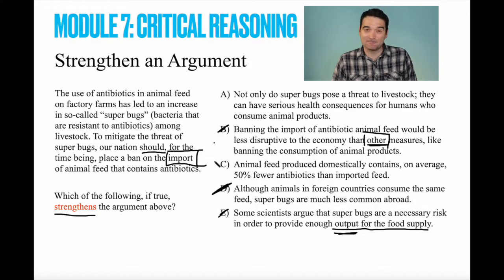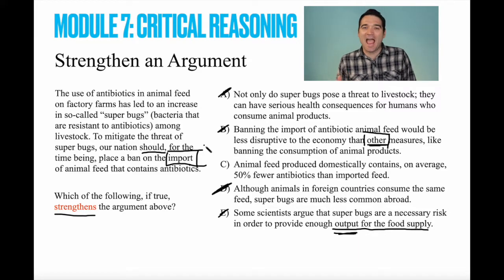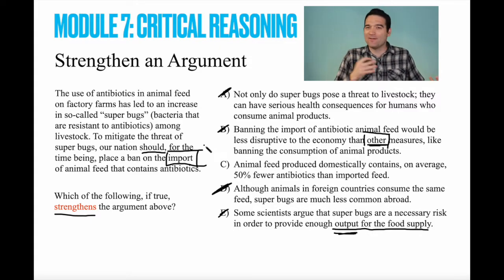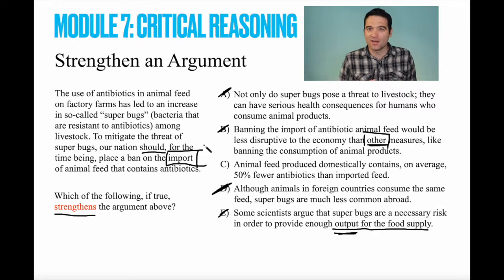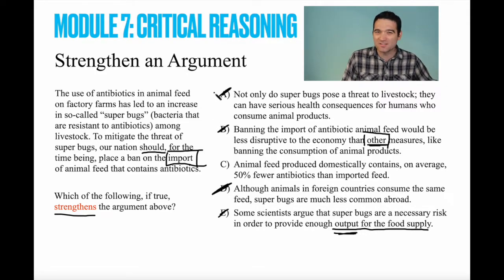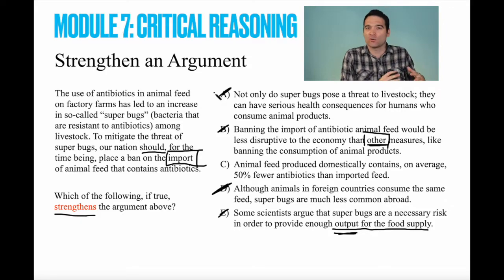Now we're down to A and C, and A is unfortunately a wrong answer — a very popular wrong answer. A simply adds more evidence to a premise that we've already accepted as true: that superbugs are bad. We already agree that superbugs are bad. If we add more evidence saying just how bad superbugs are, that doesn't strengthen the actual logic of the argument — it doesn't get us from A to B. Answer option A is a great example of strengthening evidence rather than strengthening the argument. Those are two different things.